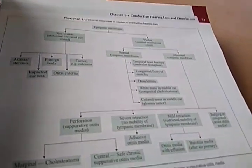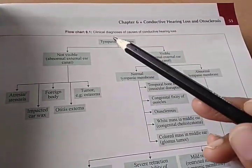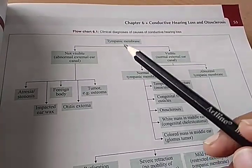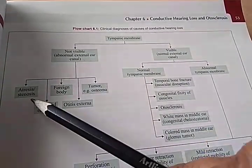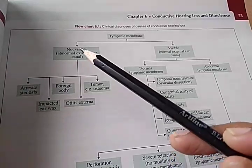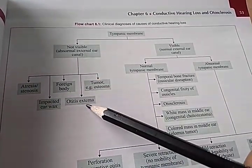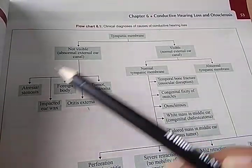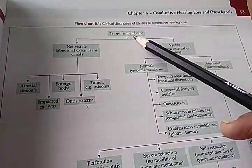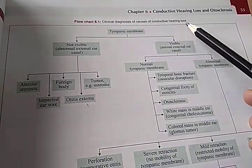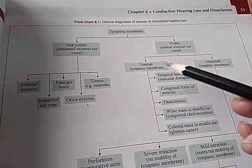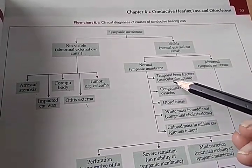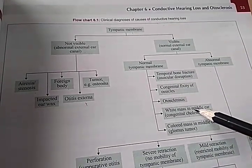Here they are talking about the clinical diagnosis of causes of conductive hearing loss. If a person has conductive hearing loss and the tympanic membrane is not visible, there could be wax, foreign body, otitis externa, tumor, or external ear abnormality. If the tympanic membrane is visible but the person still has conductive hearing loss, there could be a problem with the tympanic membrane. A normal tympanic membrane means you go deeper — probably some middle ear problem.